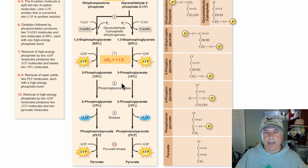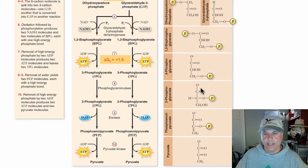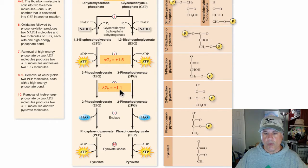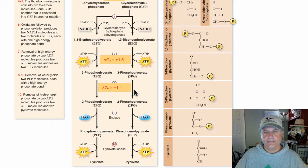In step 8, we have 3-phosphoglycerate converted to 2-phosphoglycerate by phosphoglyceromutase. The phosphate has changed which carbon it is on. This has a delta G of 1.1, so it's effectively neutral. Again, under actual cellular conditions this might be close to negative, and this would proceed readily because of the concentration of reactants and products.